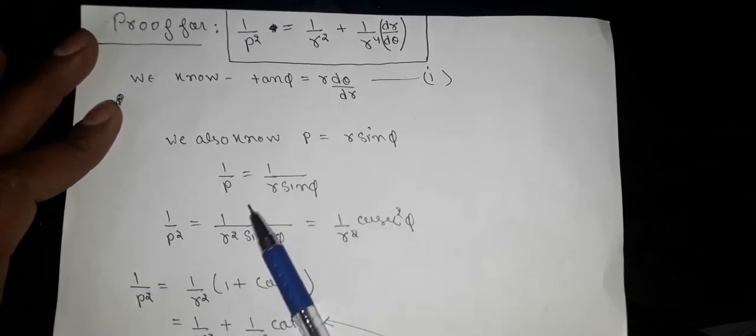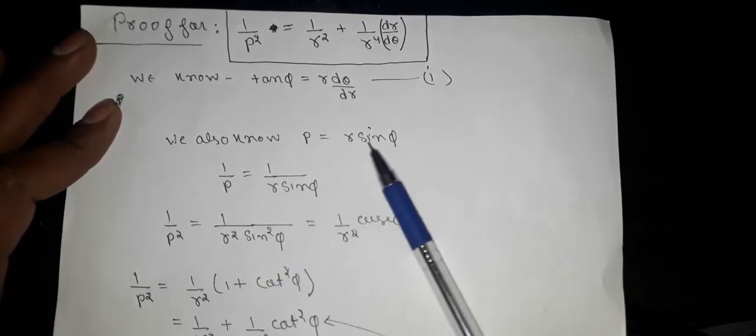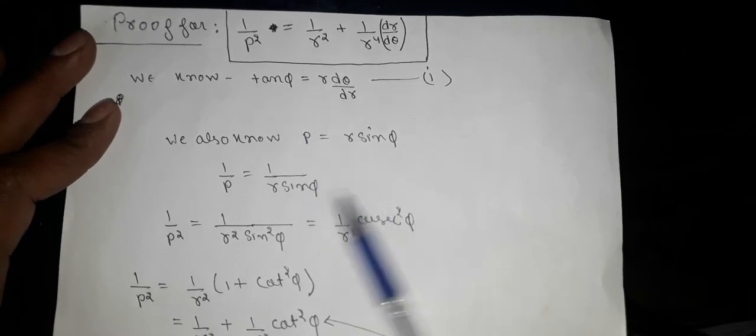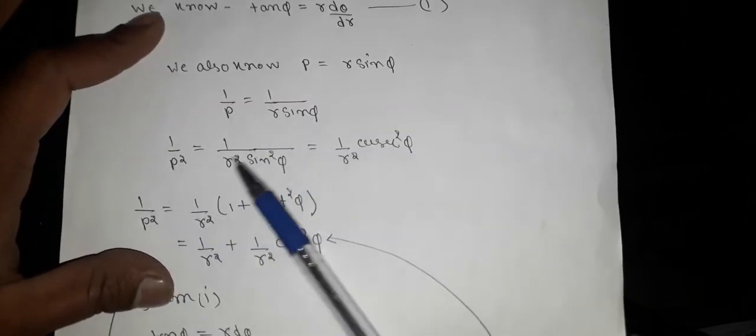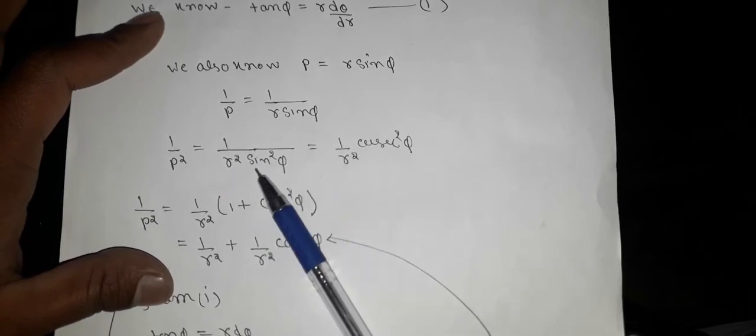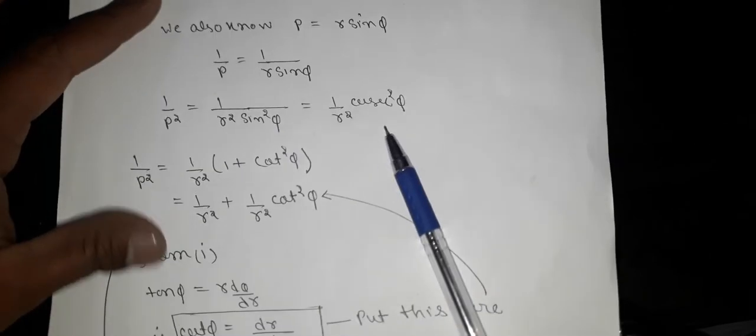1/p is equal to r sin θ, 1/p is equal to r sin θ. Then we have 1/p² equals r² sin² θ, 1 plus cot² θ, 1 plus cot² θ.